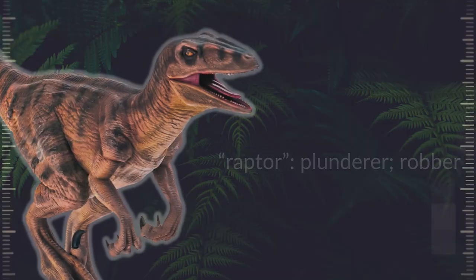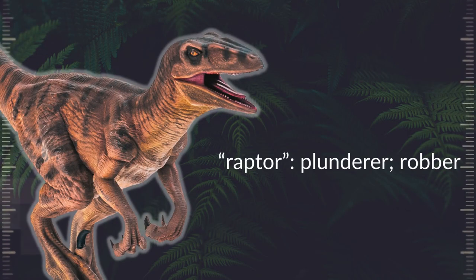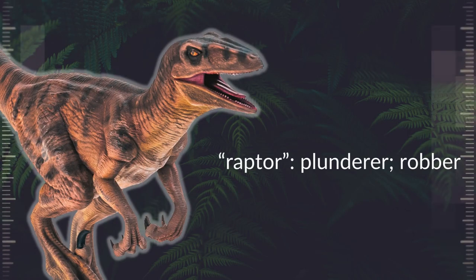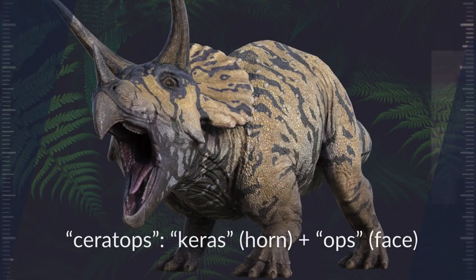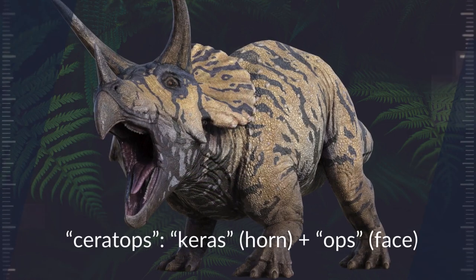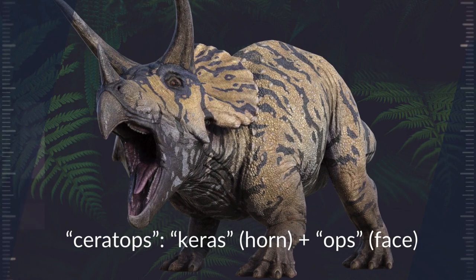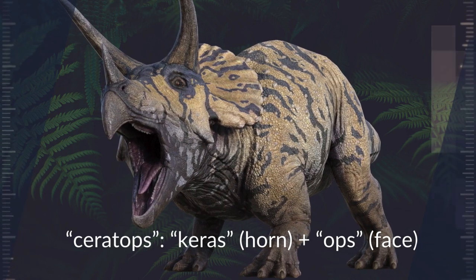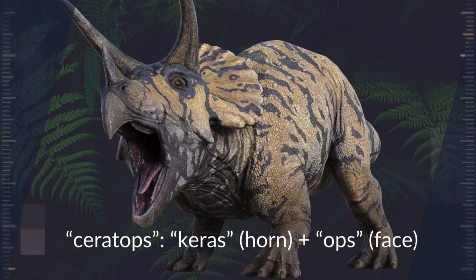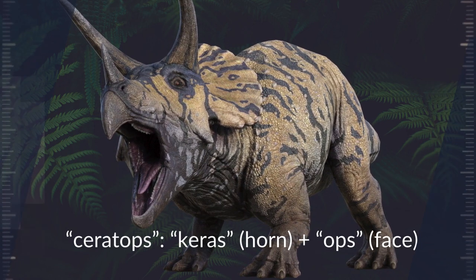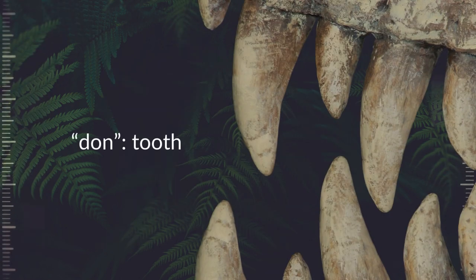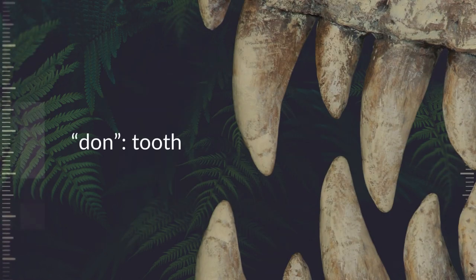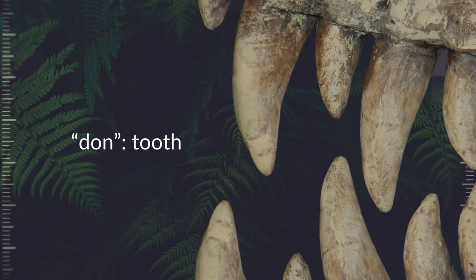For example, predatory dinosaurs often have the suffix raptor, which means plunderer or robber. Dinosaurs with prominent facial horns often include the suffix ceratops, which is derived from the Greek roots for horn and face. And dinosaurs with prominent teeth often include the suffix don in their names.